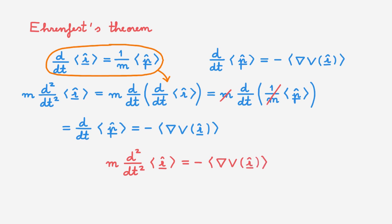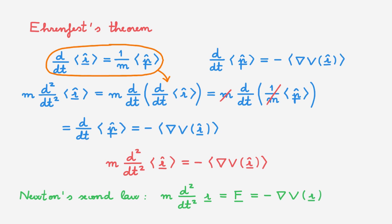We're now ready to discuss why the equations in Ehrenfest's theorem look so familiar. The theorem provides a connection between classical and quantum mechanics. We can consider Newton's second law: mass times acceleration equals the total force acting on the system. If this force arises from a scalar potential, it can be written as the negative of the gradient of the potential. This equation has the same form as the combined Ehrenfest equation, suggesting we may be able to exploit Ehrenfest's theorem to make a connection between quantum and classical particles.